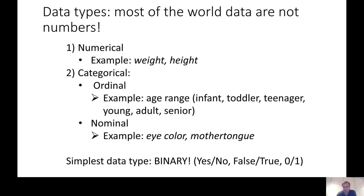Not all tables are numerical tables. Most data in the real world does not represent numbers, so you need to classify types of data values. There is a general classification into numerical and categorical data types. For a person, numerical data includes weight or height. Categorical data can be split into ordinal and nominal. Nominal data has values with no particular order — like eye color or mother tongue — where there is no natural ordering between the labels.